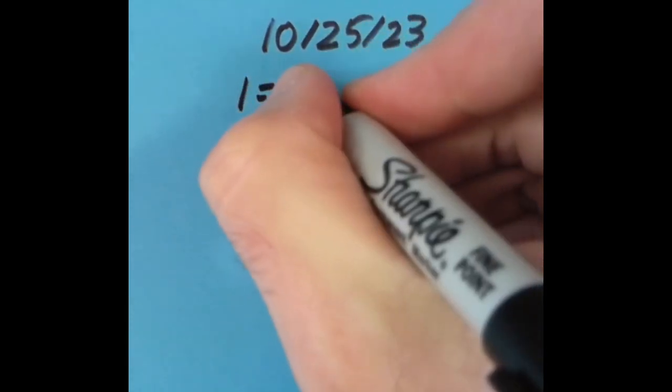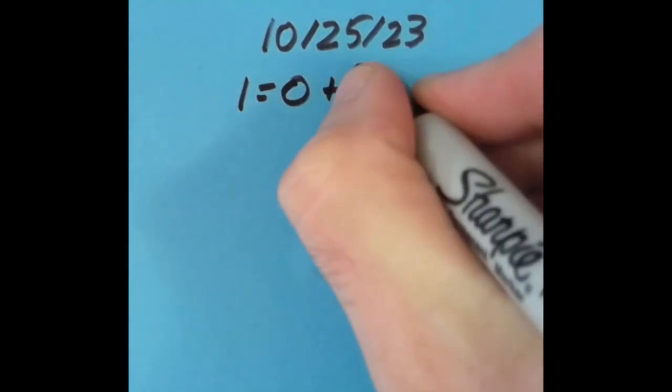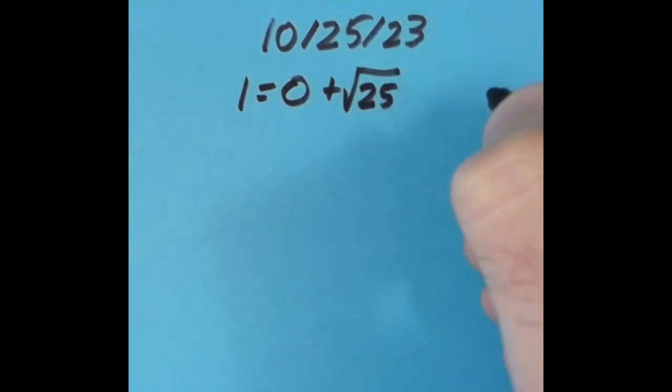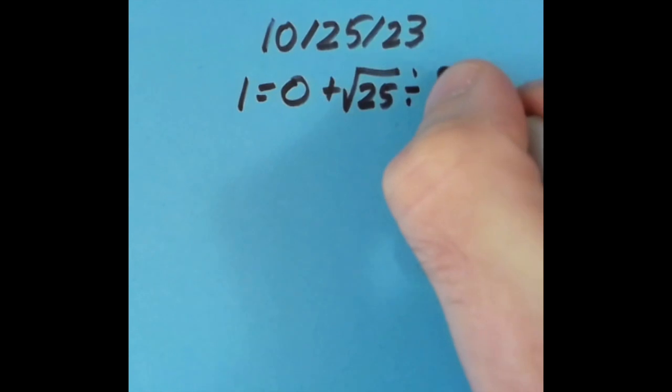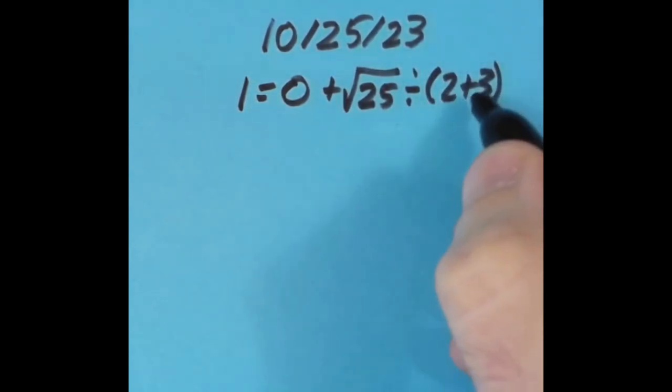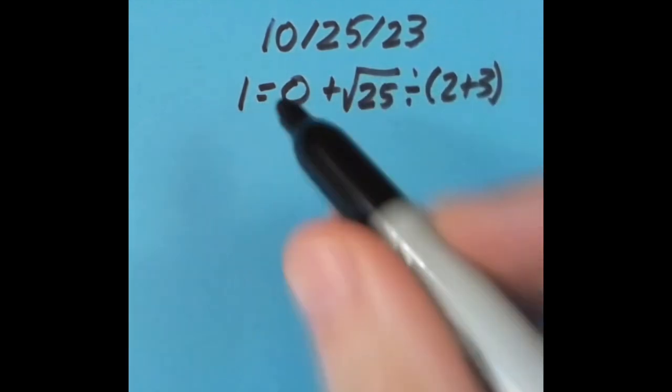I said that 1 equals 0 plus the square root of 25, which is 5, divided by all of 2 plus 3. Normally we would do the division first, but I want to do this addition first, so I need parentheses for order of operations. So 5 divided by 5 is 1, and 0 plus 1 is 1. I also tried it some other ways with the equal sign in different spots.